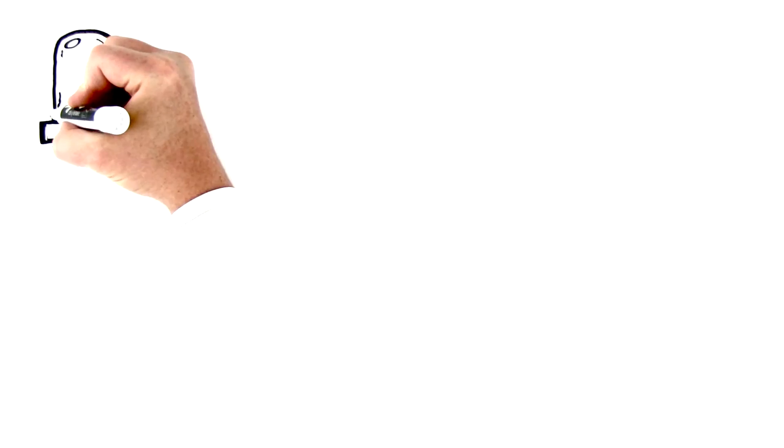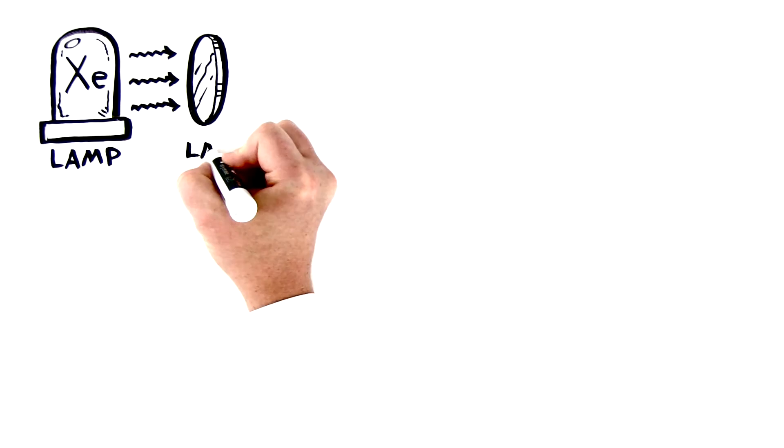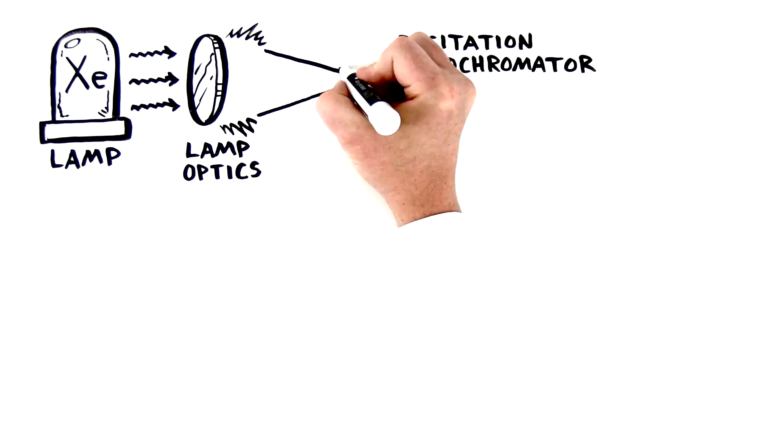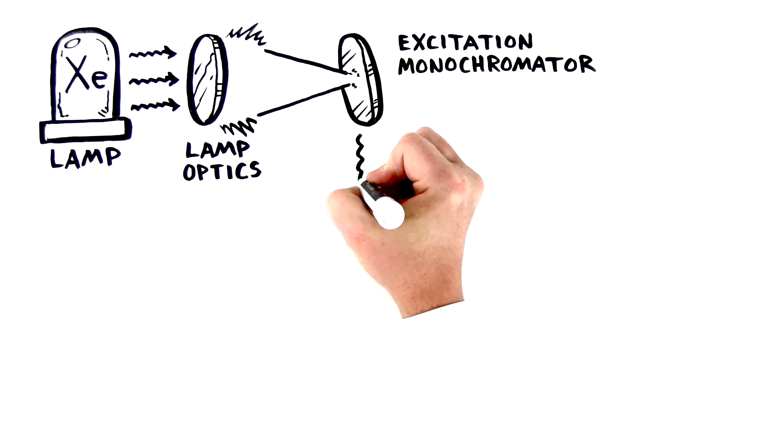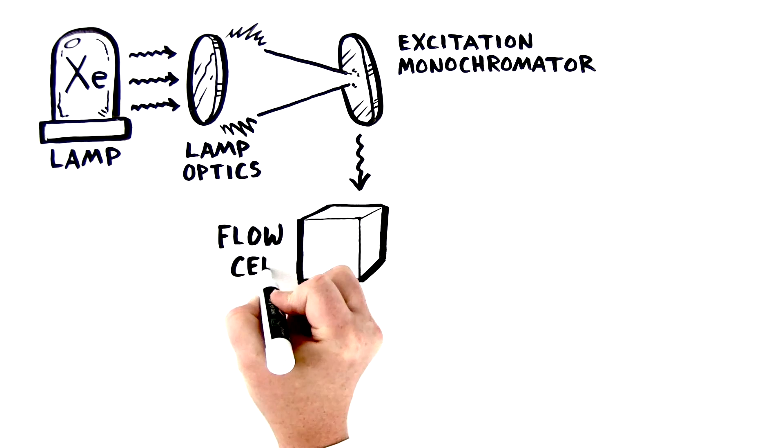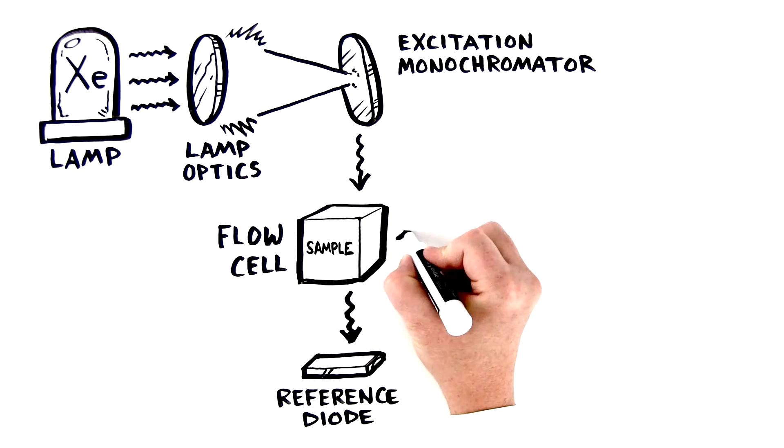In a fluorescence detector, the sample is illuminated by light coming from a xenon lamp. The xenon light is focused by lamp optics. In the light path, an excitation monochrometer enables the selection of light of a specific wavelength. Only light of this selected wavelength illuminates the flow cell that contains the sample. A reference diode behind the flow cell measures the intensity of this excitation light.